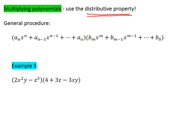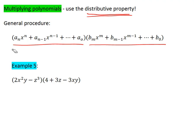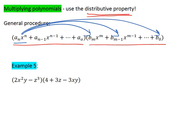Our general procedure: notice we have our first polynomial here multiplied by our second polynomial here. To multiply polynomials, you want to look at your first polynomial. We take the first term in this polynomial and we multiply it by every term in the second polynomial.